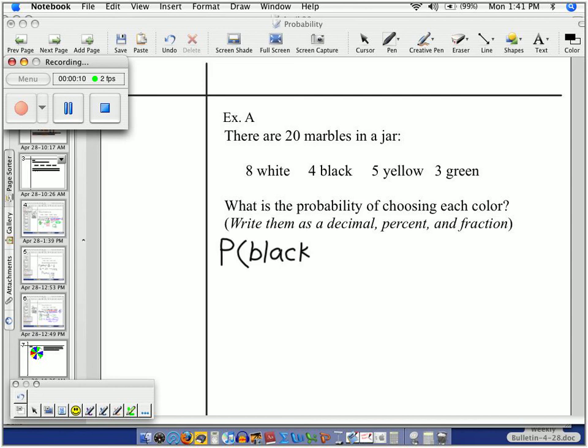And to explain this, the capital P represents probability. And on the inside of parentheses, this is my desired outcome.